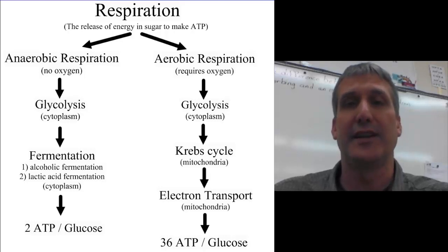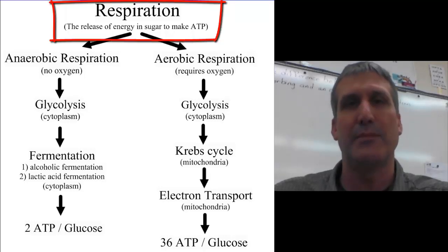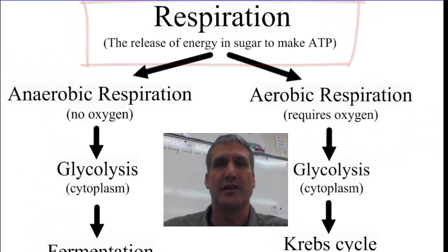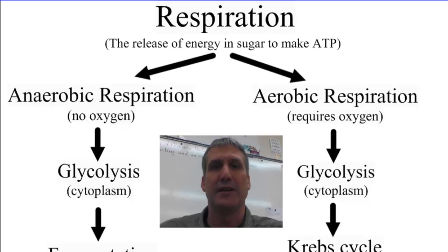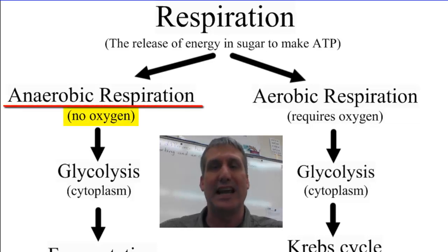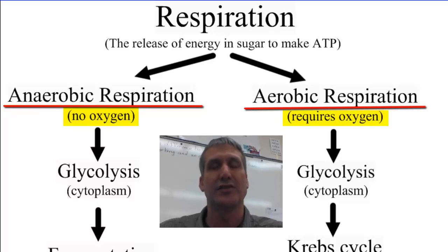Welcome aboard the Biotrain. In this video we're going to talk about respiration, which is a set of metabolic reactions that provides energy for living cells. There are two main types of respiration: anaerobic respiration and aerobic respiration. All living cells use one of these types of respiration to get the energy they need to maintain their metabolism.